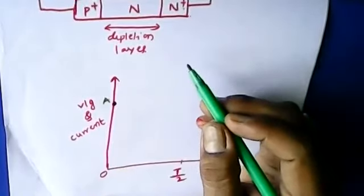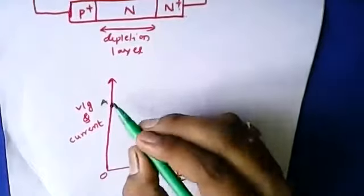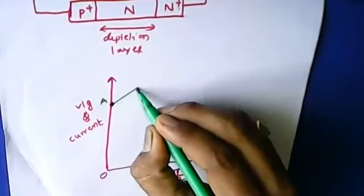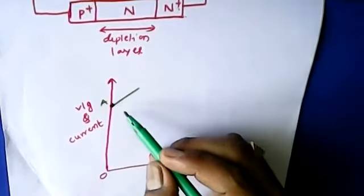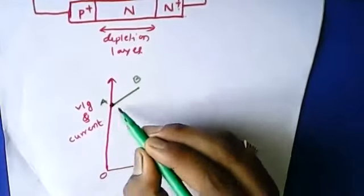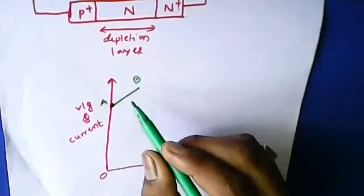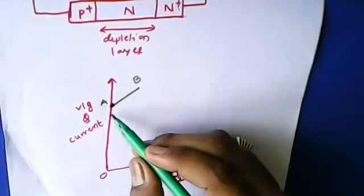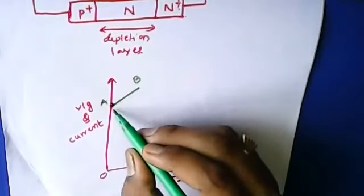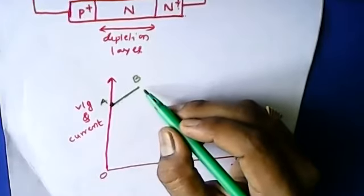Due to this, the thermal energy causes charge carriers to start charging — it acts like a diode charging like a capacitance. Since the applied field is less than the breakdown voltage but more than the threshold value, the diode starts charging like a capacitor, and the voltage keeps increasing up to point B.